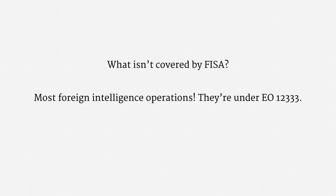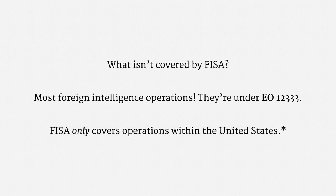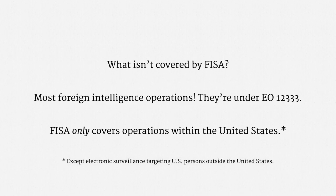You might be wondering, what isn't covered by FISA? The answer is most foreign intelligence operations. The overwhelming majority of American intelligence is conducted under Executive Order 12333. FISA only covers operations within the United States — there is that one exception for electronic surveillance targeting U.S. persons outside the U.S. It's also absolutely critical to check statutory definitions when thinking through a FISA matter. Just like we saw with ECPA, the definition of a term can totally flip the outcome of an issue. For instance, the term 'physical search' is defined to only cover searches inside the United States.